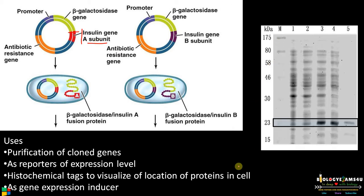The second use is as reporters of expression levels. For example, this 23 kilo Dalton band is a recombinant fusion protein. On the gel, different lanes represent different treatments, and you can see differences in expression levels. In the presence of an inducer, expression changes can be studied. So fusion proteins allow us to study expression levels very easily.